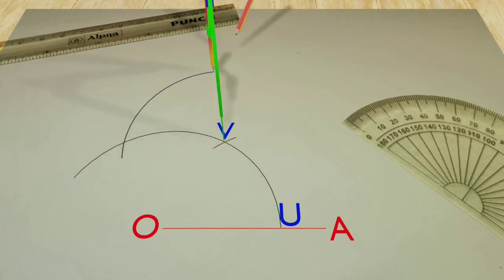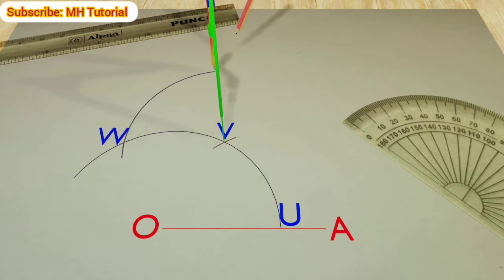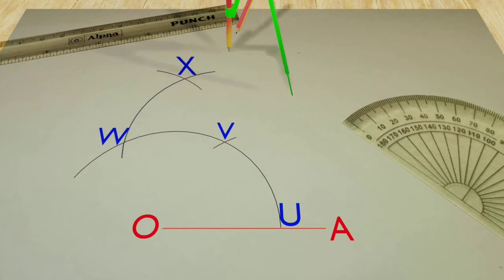Again, point W is taken as center of another circle arc to get an intersection against the third arc. This point of intersection is X.